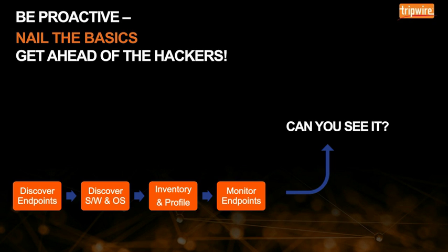Especially as rapid transformation is happening, there are always going to be new endpoints and changes. Software keeps changing, new patches keep getting applied, new versions are happening. How do you protect them if you don't even know what you have? When I say get ahead of the hackers — guess what? They're looking at what's changing. They're looking at the latest patches and the vulnerabilities in previous versions. So if you're not on that ball, they are, and they'll get in before you find out what's happening. If you don't know what's out there, how can you possibly secure it?